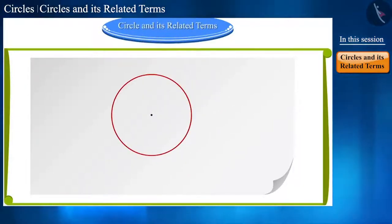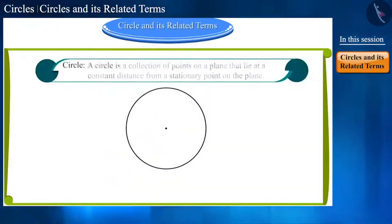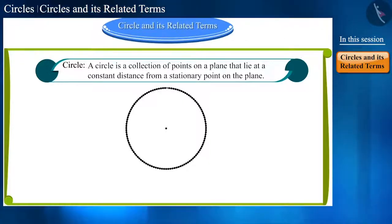Friends, you are well acquainted with the shape made on this paper. Yes, this round figure is called a circle. Based on its design, we can define the circle thus: a circle is a group of points on a plane that lie at a constant distance from a stationary point on the plane.